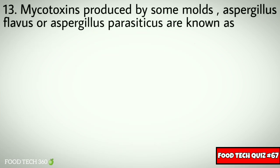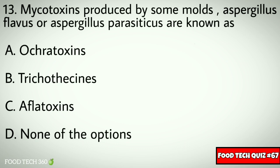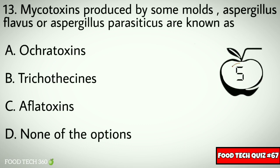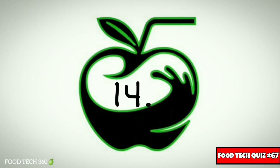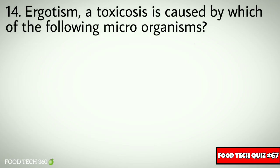Question number thirteen: mycotoxins produced by molds Aspergillus flavus or Aspergillus parasiticus are known as? Options: A) aflatoxin, B) trichothecins, C) aflatoxin, D) none of the options. Correct answer: C) aflatoxin.